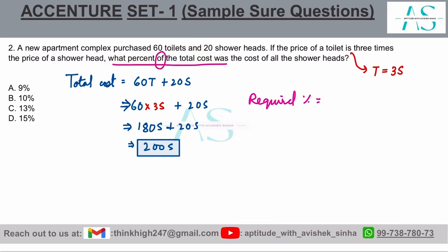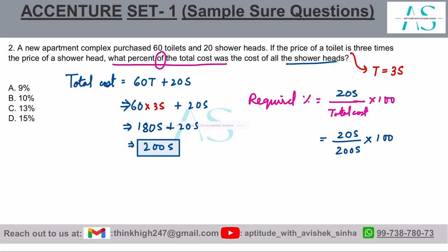Here the keyword is 'of' followed by 'total cost', so total cost becomes the denominator, which is 200s. The numerator is the cost of shower heads, which is 20s. Simplifying 20s/200s × 100 gives 10% as the answer — option B.